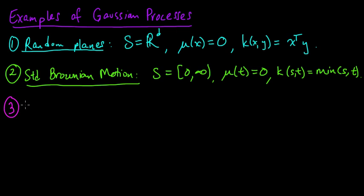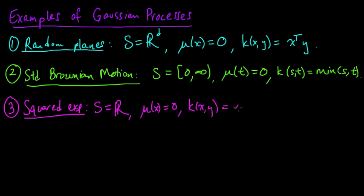a very heavily used Gaussian process in machine learning and for regression uses what's called the squared exponential kernel or the squared exponential covariance function. And for this, let's look at the 1-D case first, maybe.